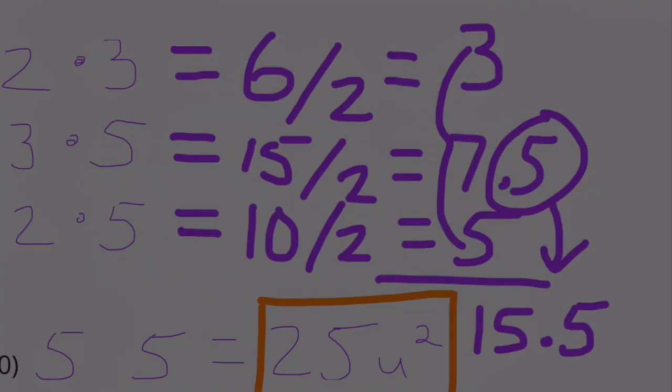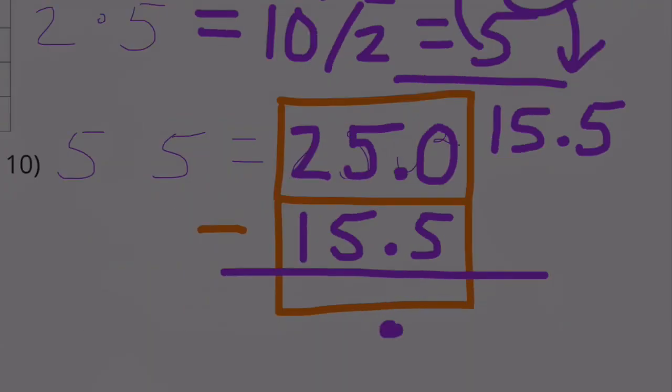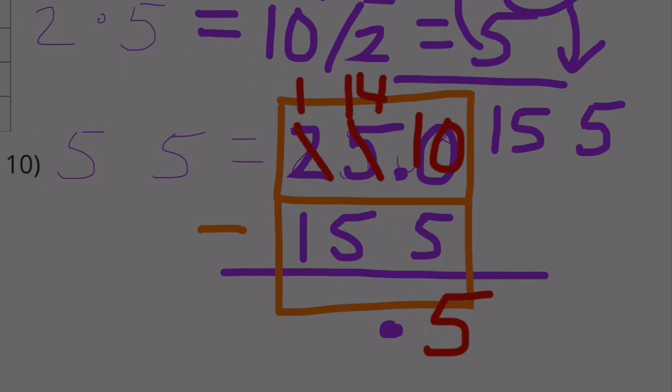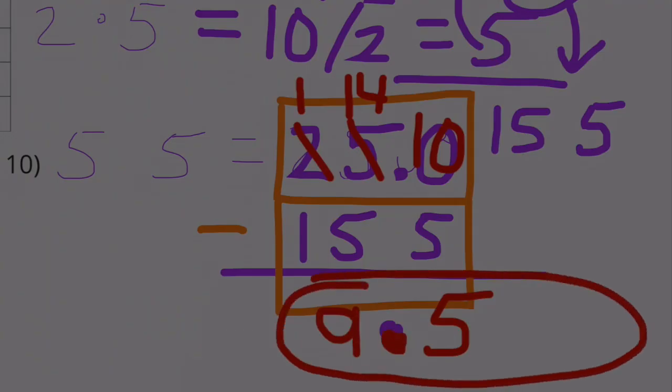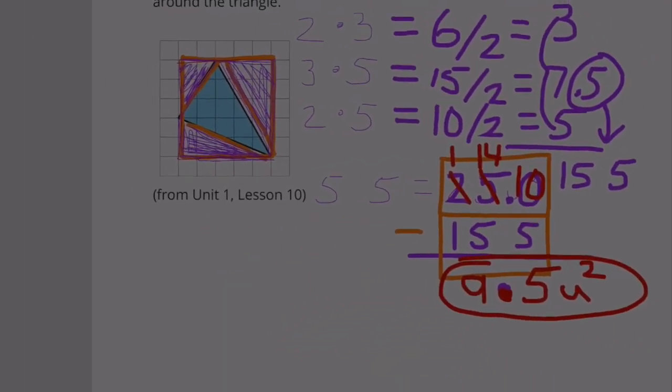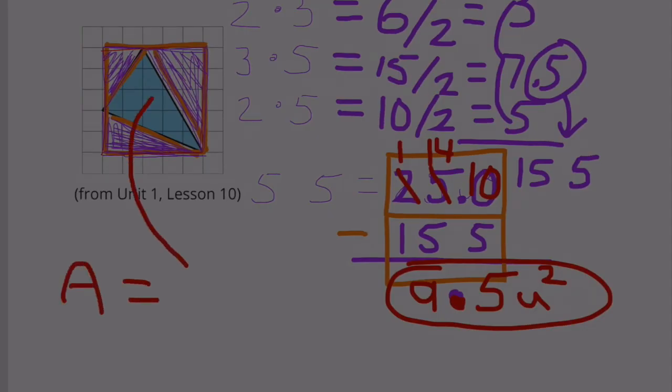We need to subtract 15.5 from 25. 0 minus 5, we can't do that, so we're going to have to borrow. 10 minus 5 is 5. 4 minus 5, can't do that, going to have to borrow. 14 minus 5 is 9. 1 minus 1 is 0. So we have 9.5 units squared. The area of the blue triangle is 9.5 units squared, or 9.5 square units.